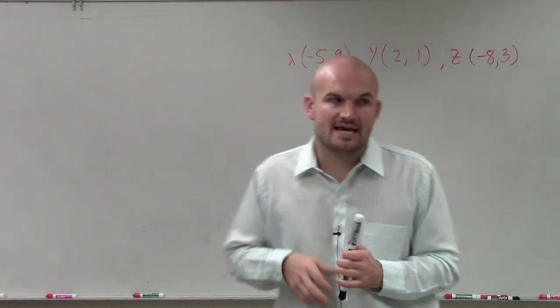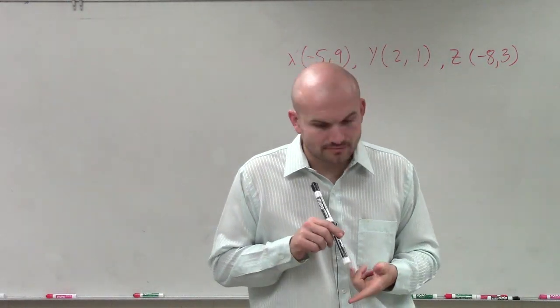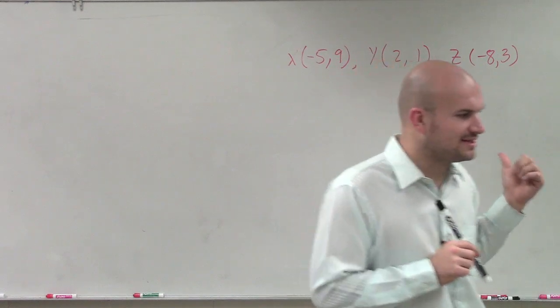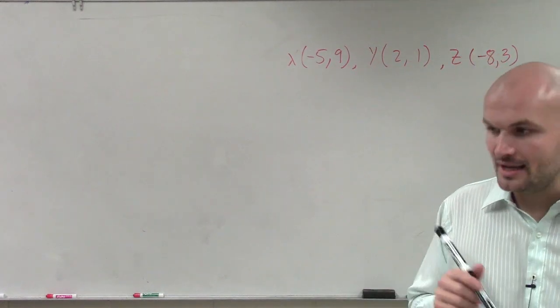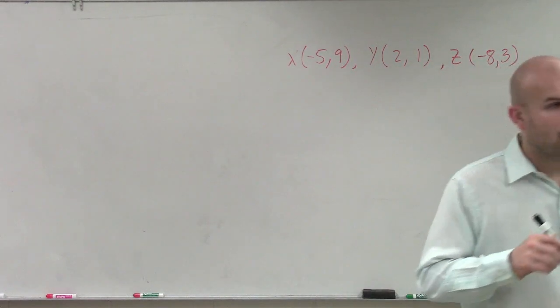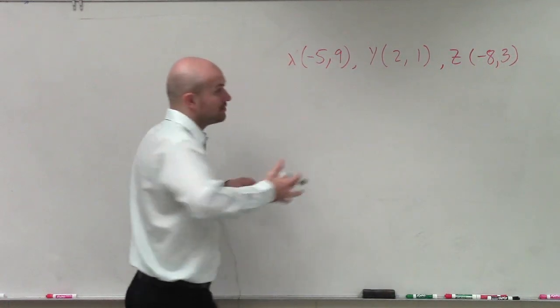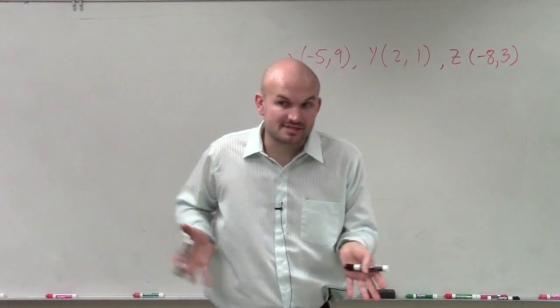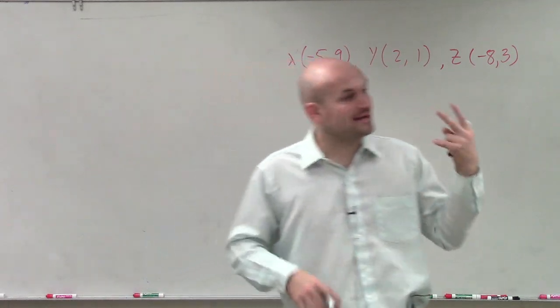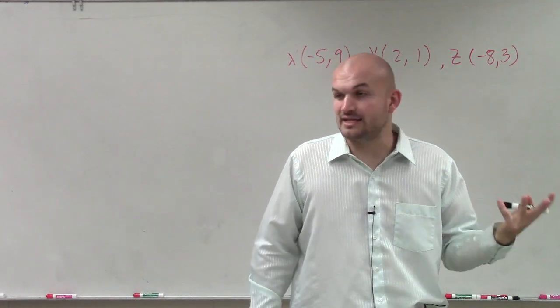What they're asking us is that if we plot these points, is that going to create a scalene, an equilateral, or an isosceles triangle? So remember, equilateral is when all three measurements are exactly the same. Isosceles is when we have two equal sides, and scalene is when we have three.